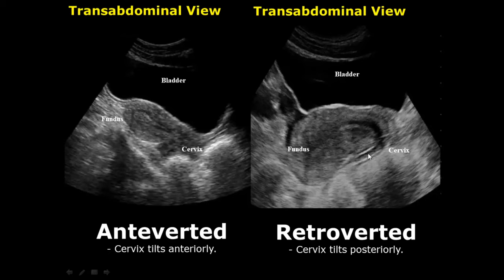In the retroverted uterus, you can notice the cervix is facing posteriorly or downwards in this image. Again, there is no noticeable bend of the body of the uterus, so we do not comment on it.